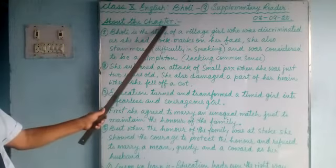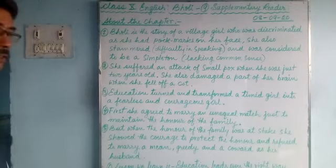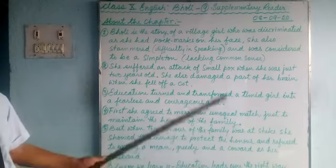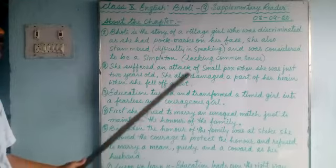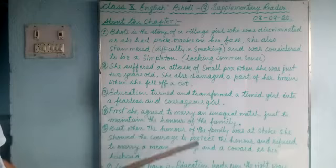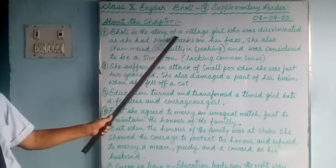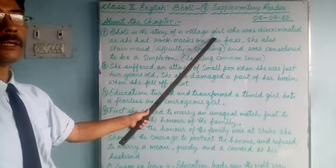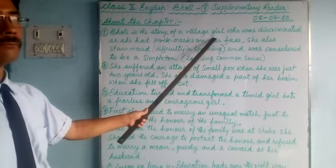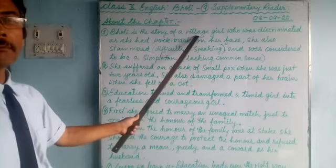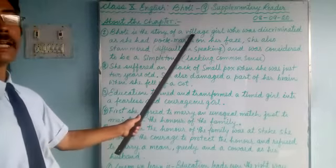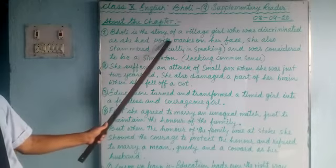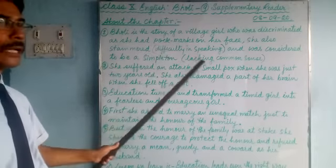There are altogether six points I've written over here about the chapter. Listen carefully, pay attention, and try to understand. Then we'll go into detail. First, Bholi is the story of a village girl — from a small village, not from the city where all kinds of facilities are available. She lives in a village with minimum facilities.